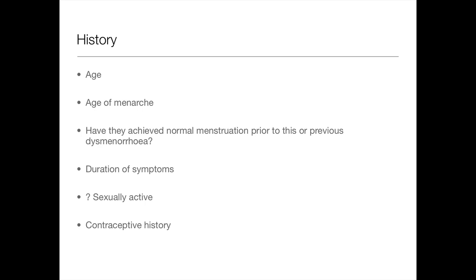Are they sexually active? This is important to establish whether they're pregnant. If they say they're not sexually active you can consider ruling out pregnancy, but always do a pregnancy test regardless. Contraceptive history is also important — if they're on the progesterone-only pill or Implanon, a progesterone implant, then they usually don't get periods with that and may not understand why. There are various patterns: some women get periods, some don't, some get spotting.